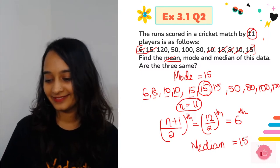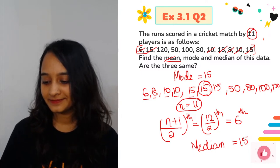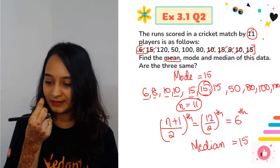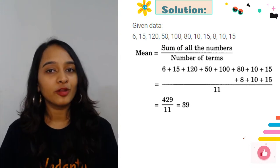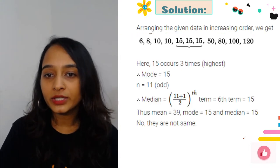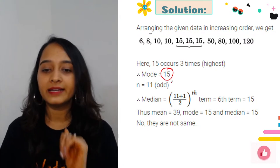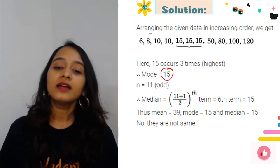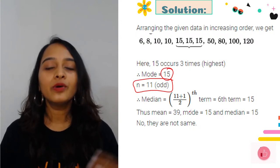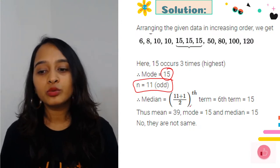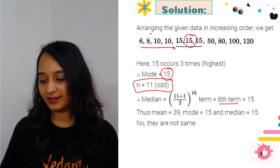Rachit asks why it's different in his book? Let me clarify: mean of the data is sum of all observations divided by the total. Mode is what repeats itself the maximum number of times - here it is 15. And the median: since n = 11 which is odd, it is n+1 divided by 2 = 12/2 = 6th term, and the 6th term here is 15.